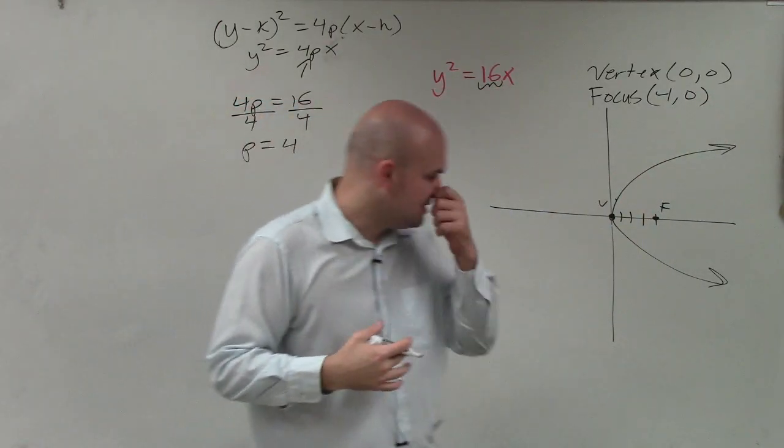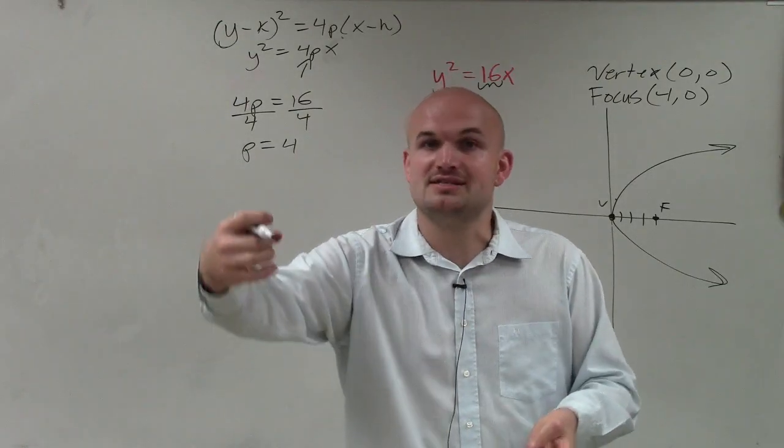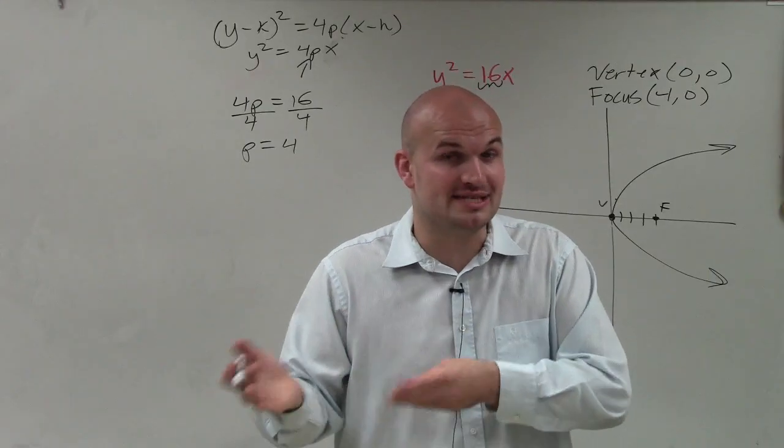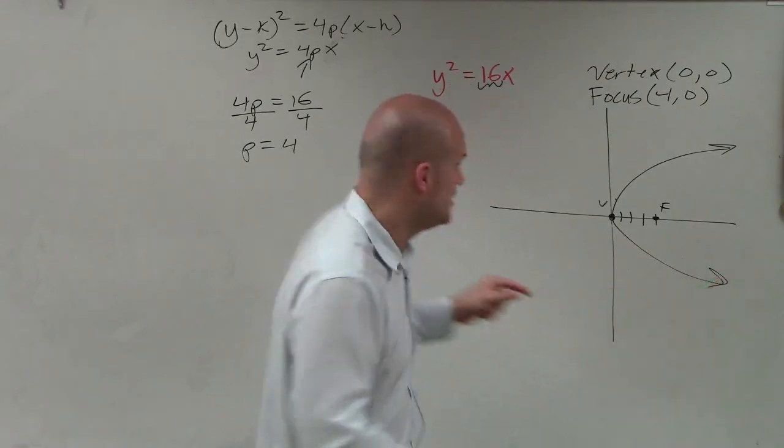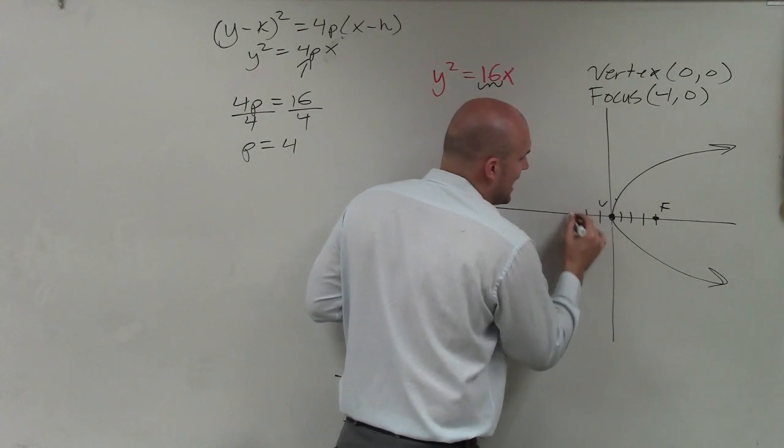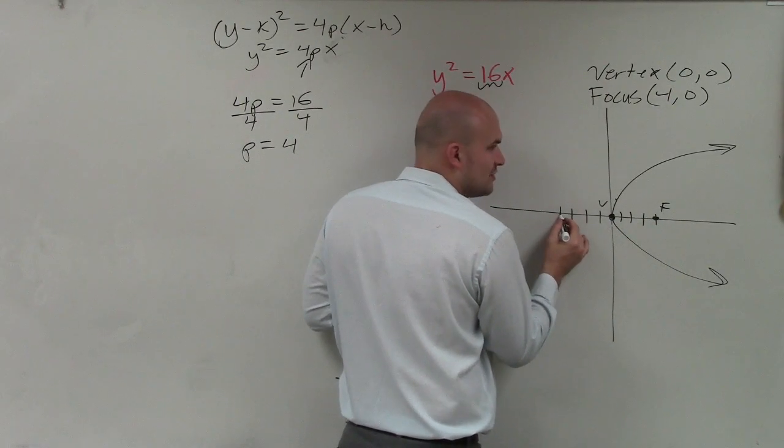Now remember, the definition of a parabola is the distance from the focus to the vertex is the exact same distance, or absolute distance, from the directrix to the vertex. So from the vertex, if I'm going over 4 units to the focus, I can go 4 units in the opposite direction to find the directrix.